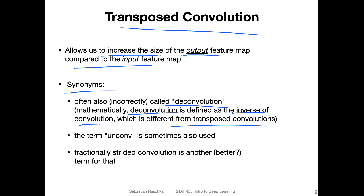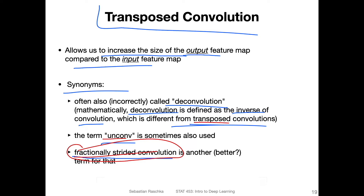So we also call it a transposed convolution — the name comes from the fact that we go the opposite direction, from large to small becoming small to large. Sometimes people also use the term 'unconv' or 'unconvolution,' and sometimes people use the term 'fractionally strided convolution,' which might be a better term if you consider how it is implemented. But if you read a deep learning paper and people talk about a deconvolution, unconv layer, transposed convolution, or fractionally strided convolution, chances are all of these mean the same thing. People use all these words synonymously.